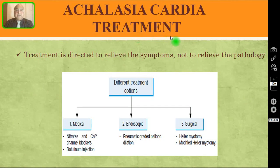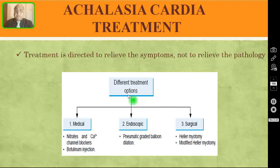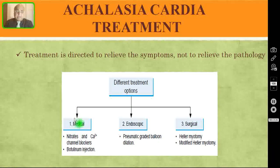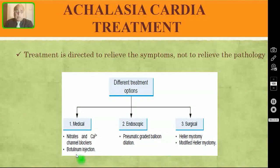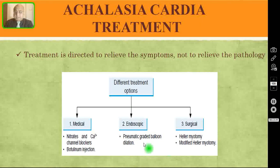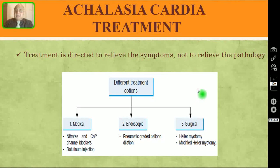Coming to the treatment, treatment is directed to relieve symptoms rather than the underlying pathology. There are different treatment options: medical treatment, endoscopic treatment, and surgical treatment. Under medical treatment you can give nitrates or calcium channel blockers, or botulinum toxin injection. Endoscopically you can do pneumatic graded balloon dilatation. Surgically you can do Heller's myotomy or modified Heller's myotomy.